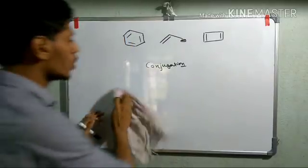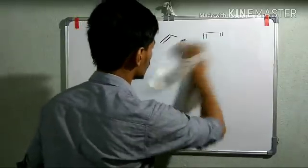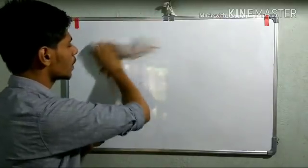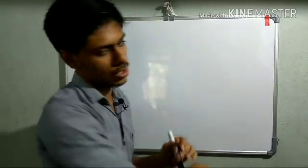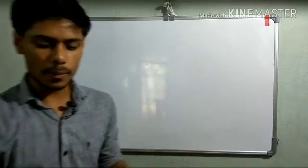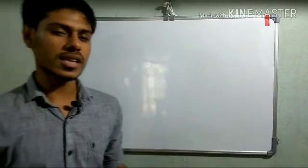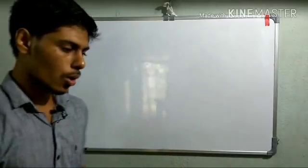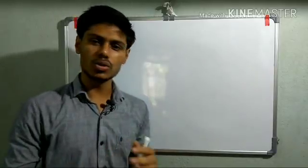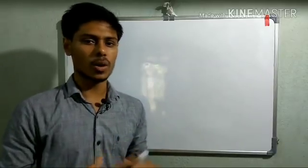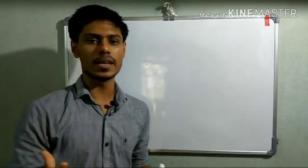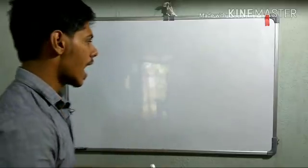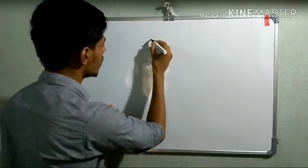We will talk about conjugation, which means we will talk about p orbitals and pi bonds. Forget about the sigma bonds and just concentrate on the pi bonds. For talking about conjugation and delocalization, let us start with the very simple example of a conjugated system: the allylic system.